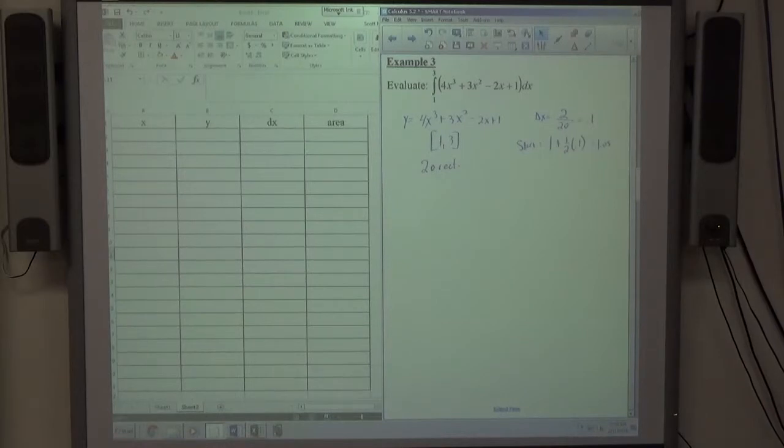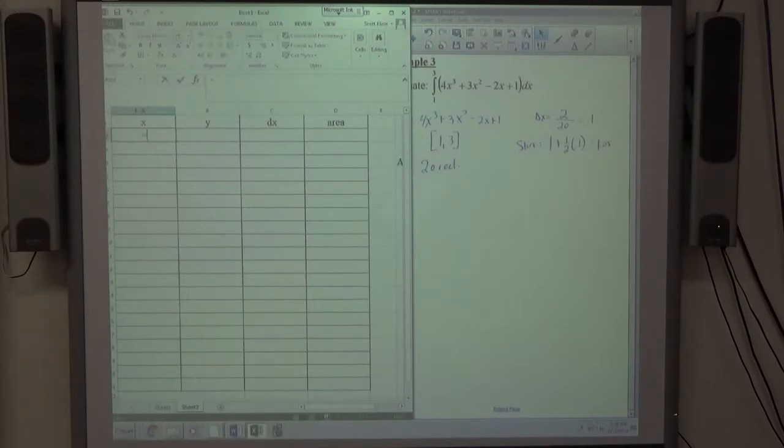So if I go over here, again, I can type in my x column. I can just type in 1.05, but again, if I do it this way: equals 1 plus 0.5 times delta x, which is 0.1.